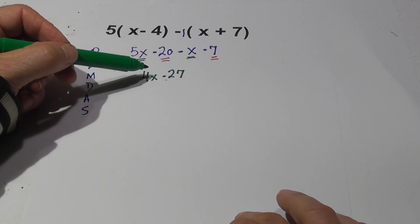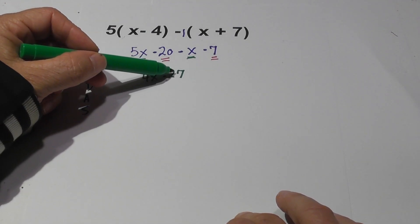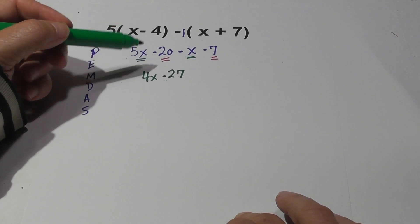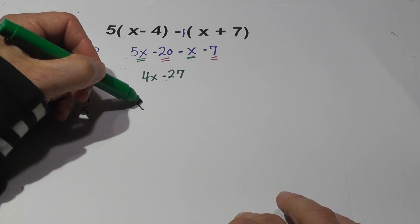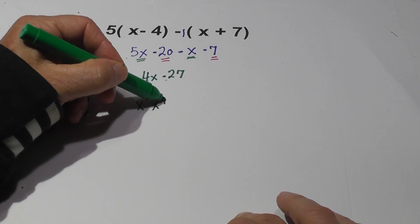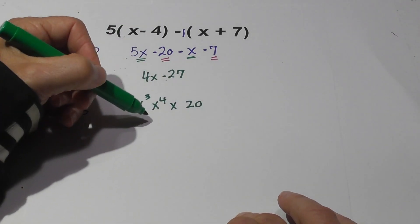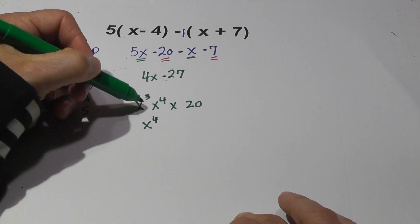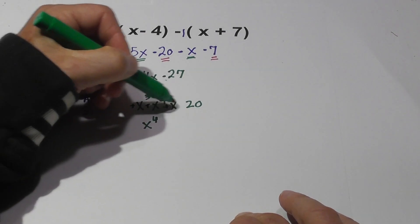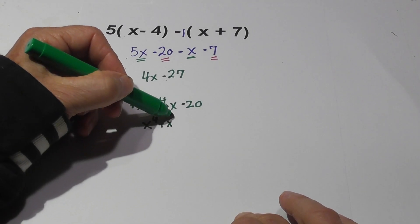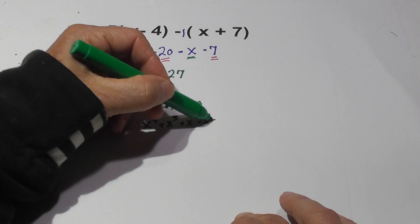Now you need to write them. This is x to the first power. This is 27, it really has no power, or you could say zero. So you always write it in descending order. For instance, if you had x cubed, x to the fourth, x, and then 20, you would write it x to the fourth, and let's say that's a positive and a positive and a positive and a negative. So you could go x to the fourth plus x to the third plus x minus 20.